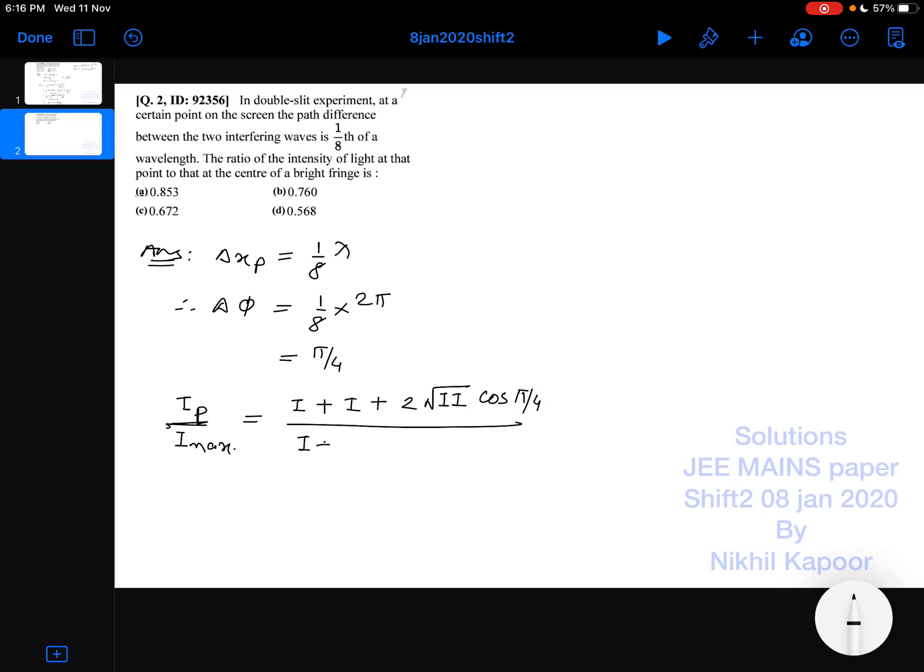divided by i plus i plus 2 root i plus i at central point, the phase difference is 0. So in the numerator, it will be i plus i will be 2i plus 2i cos 45 will be 1 by root 2 divided